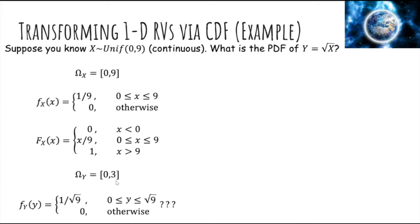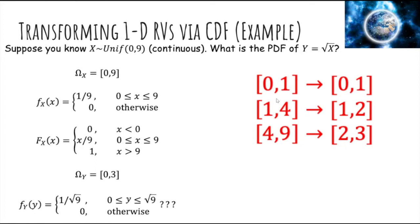But is it true that Y is also uniform? That seems logical because it's a function of a uniform random variable, but actually that's not true. Notice that values of X from 0 to 1, if you take the square root, map to Y from 0 to 1, whereas values of X from 4 to 9 map to Y between 2 and 3. There's a much larger range of X values mapping to 2–3 than to 0–1, even though those Y ranges are identically sized. Therefore, Y's distribution shouldn't be uniform — it's not the same as X.